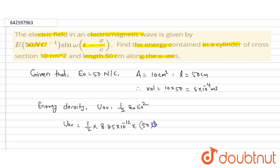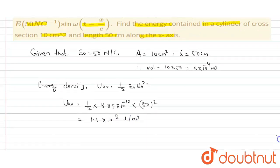So 50², we get the energy density as 1.1 × 10⁻⁸ joule per meter cube. Now we have to find the energy.